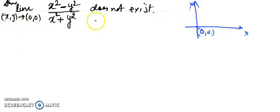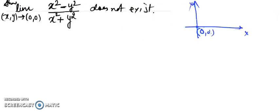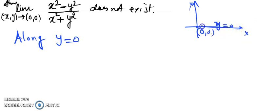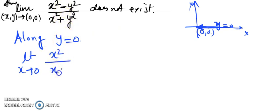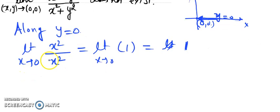I am going to try different paths. The first path is along the x-axis. Along the x-axis, y = 0. So when y = 0, as x tends to 0, the expression reduces to x²/x², which simplifies to 1. The limit of the constant 1 is 1.